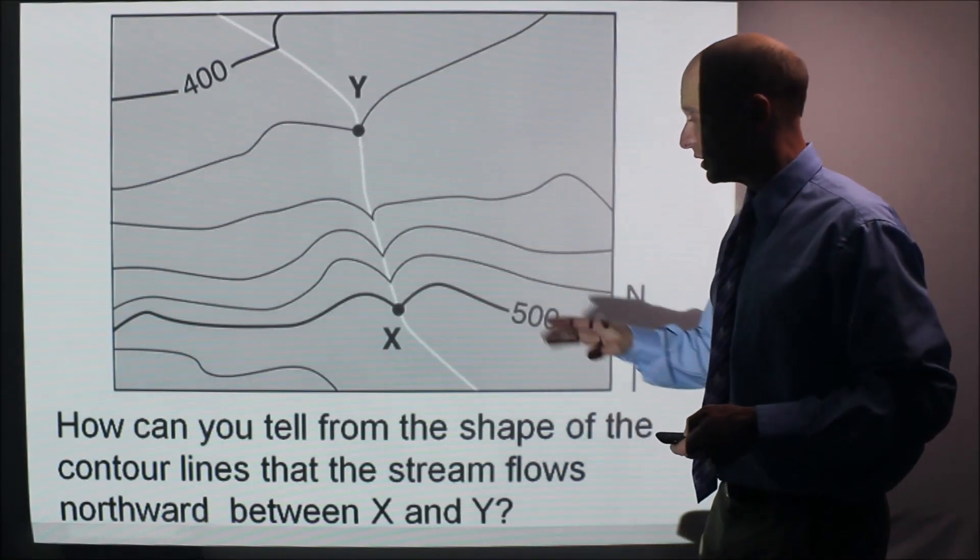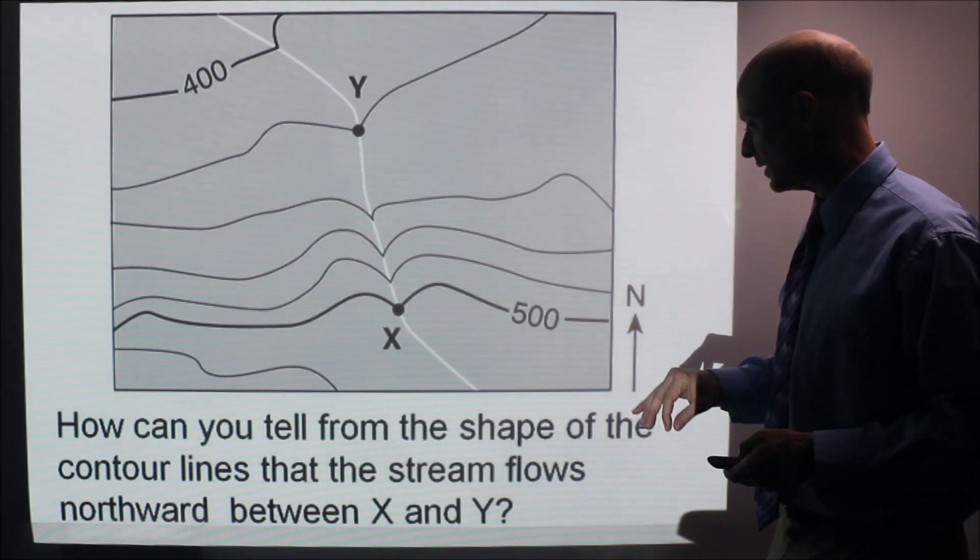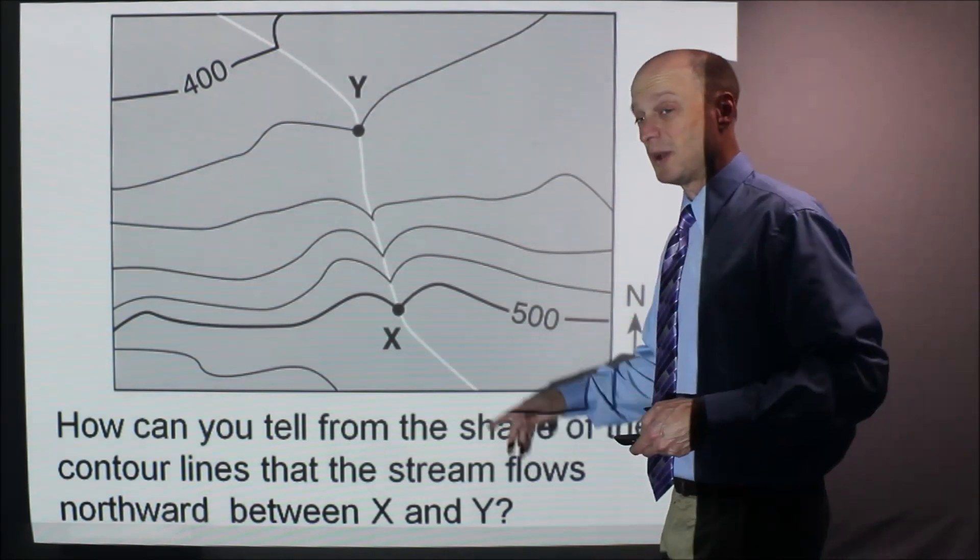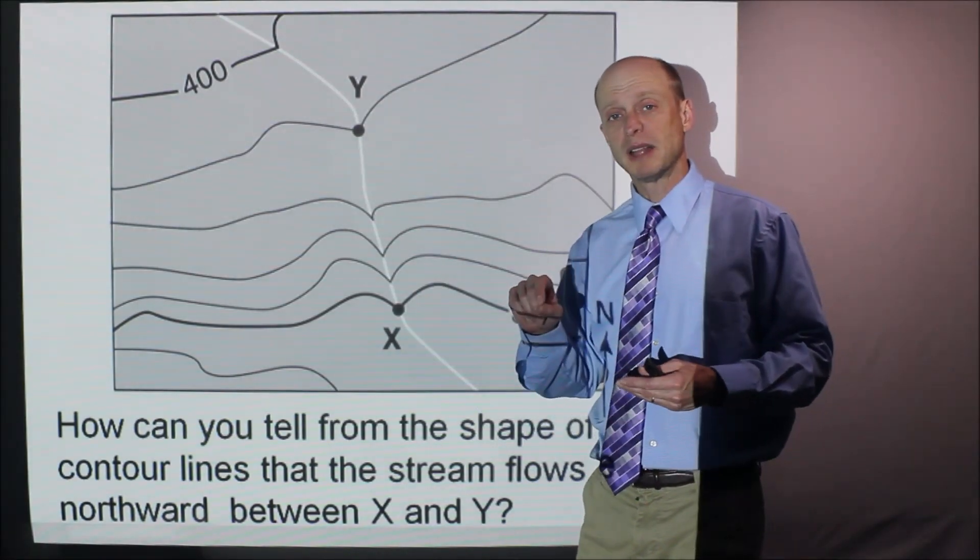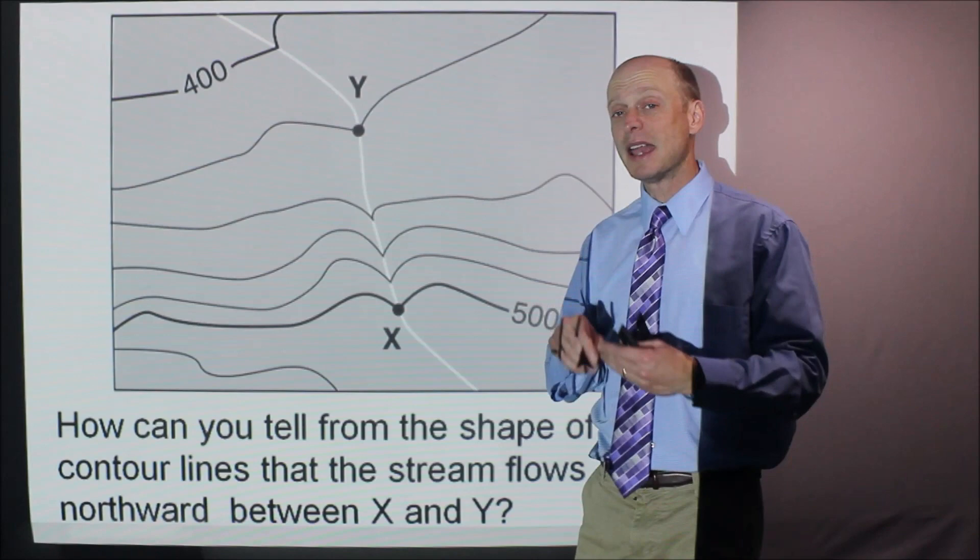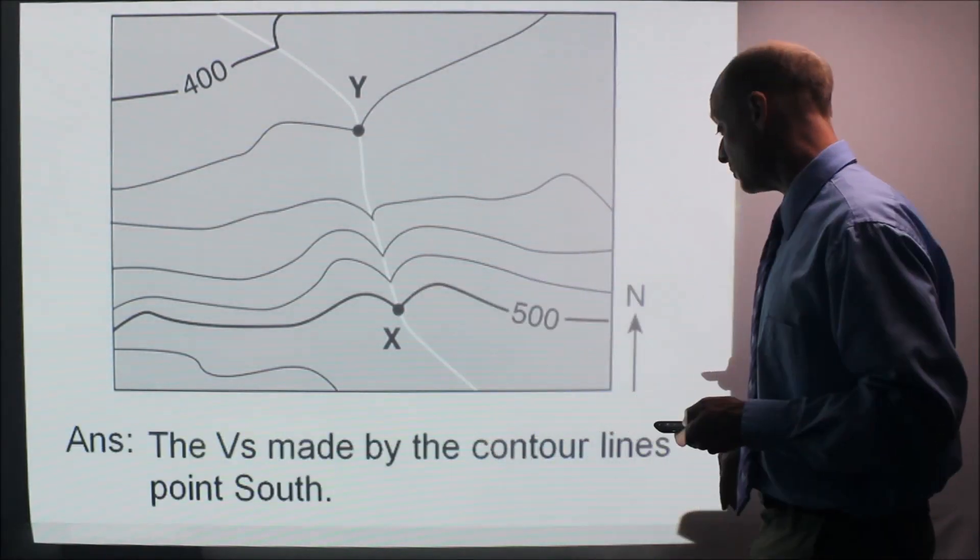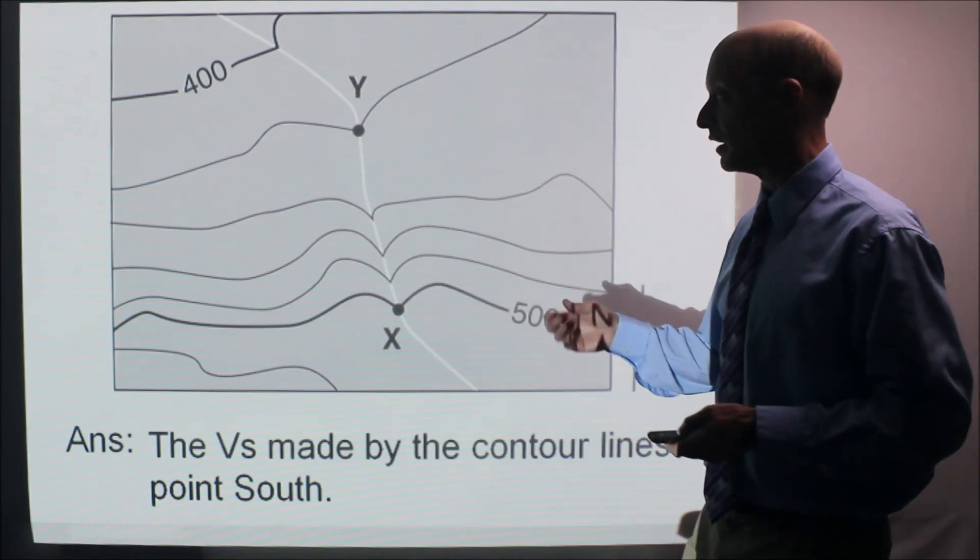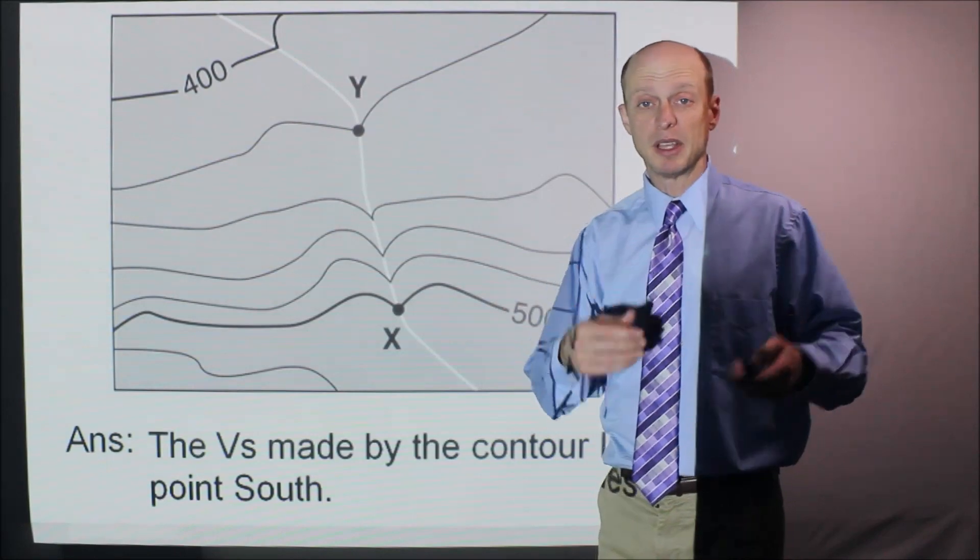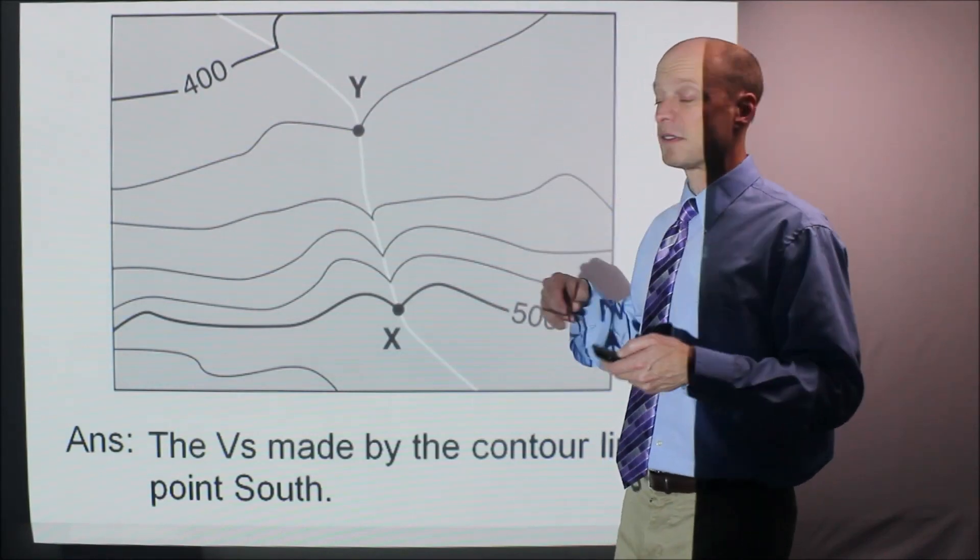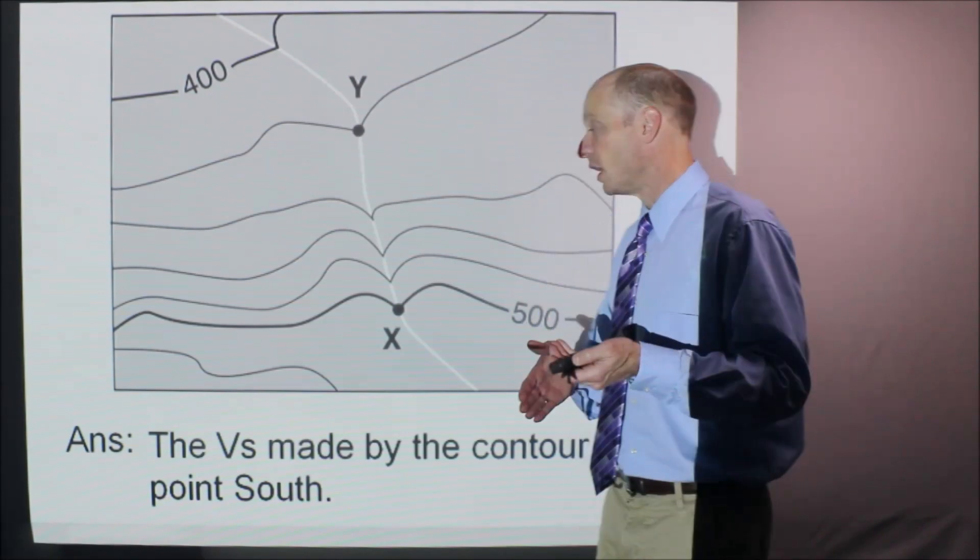Now sometimes watch this. Look at this question. How can you tell from the shape of the contour lines that the stream flows northward between x and y? So it's telling you that it flows northward. The question would be sort of fill in the blank type of question and say how can you tell from the shape of the contour lines? And you would say something like this. The V's made by the contour lines point south. Therefore it flows north. You could say the contour lines make V's and they point uphill or they point upstream. You could say the river flows the opposite direction that the V's point. Something that expresses that would work.